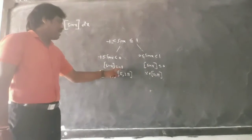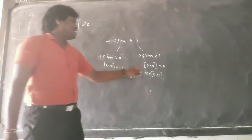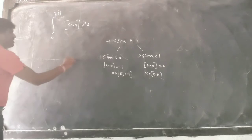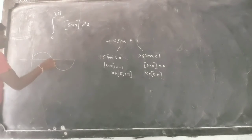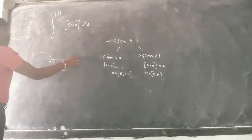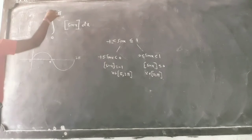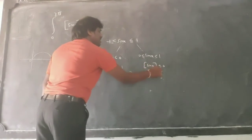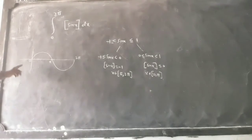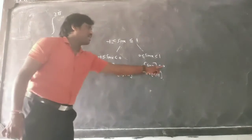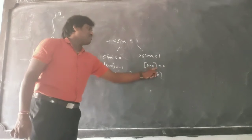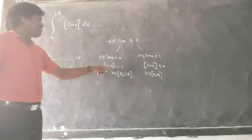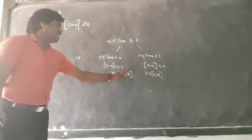So sin x will be negative when x is in π to 2π, and sin x is between 0 and 1 when x is in 0 to π. Here is the graph of the sin x function — this is π and this is 2π. So from 0 to π, the greatest integer of sin x is 0, because sin x is in the range 0 to 1.